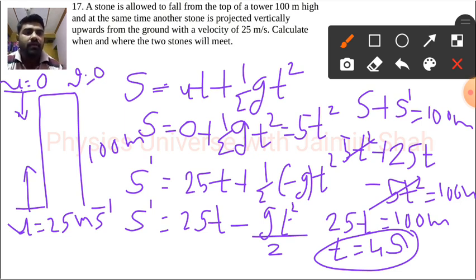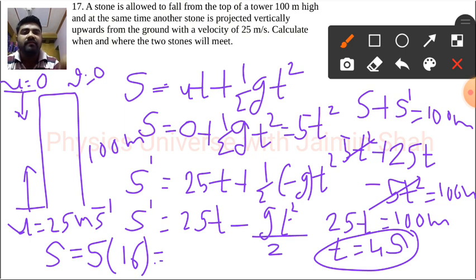We can put this t in the first equation: S is equal to 5t squared. So S is equal to 5 times 16, so S is 80 meters.